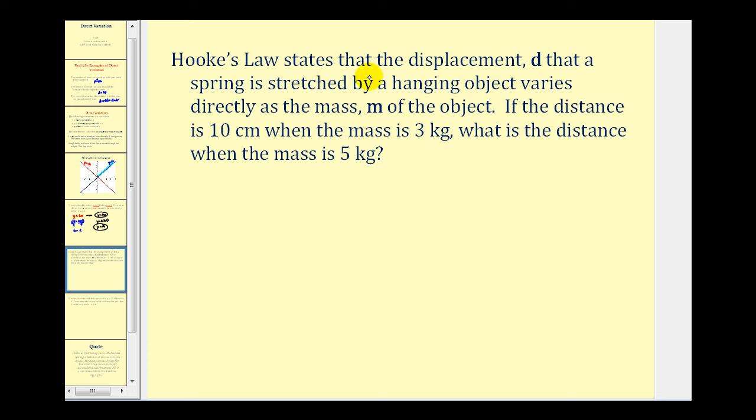Hooke's Law states that the displacement, D, that a spring is stretched by a hanging object varies directly as the mass M of the object. Now this is kind of a long sentence, but the most important part is D varies directly as the mass M. So the equation for this problem is going to be D equals the constant K times M, the mass.